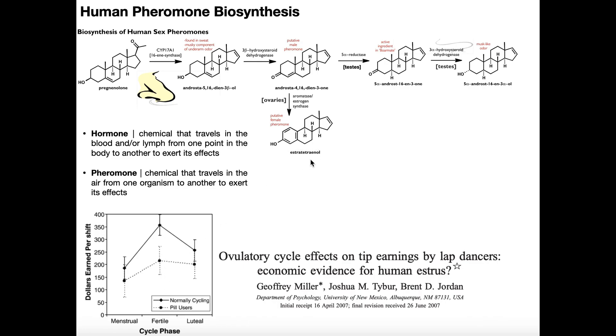Estratetraenol floats through the air, it's airborne, it enters the male nose, and it has very subtle biological effects that men are not consciously aware of. They're not consciously aware that they seem to actually favor the fertile women. And so this is a really interesting study that actually shows some economic evidence, if you want to think about it that way, of pheromonal effects in humans.